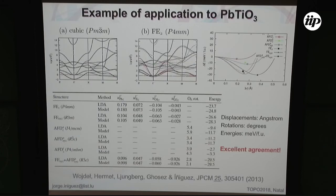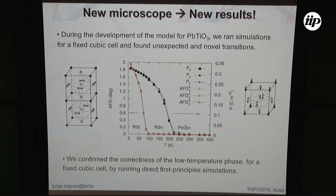Just to show how it works for lead titanate very quickly: implementing these ideas, we get models that are very very accurate, with excellent agreement. You can find the results in the paper. Once we have the new models, we started discovering new things — unexpected results — almost immediately. For example, in lead titanate, which usually has a single transition from paraelectric to ferroelectric, we considered it constrained to remain cubic — in the high-symmetry phase — at all temperatures.